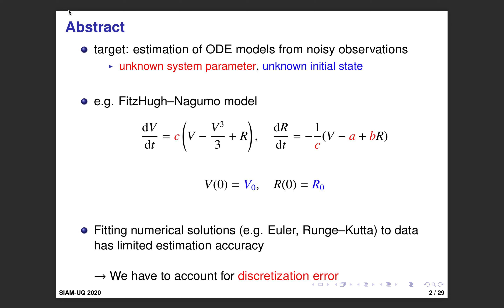For such problems, one usual method is to fit numerical solutions like Euler or Runge-Kutta solutions to the observation data. But such a data fitting procedure has limited estimation accuracy, especially when the numerical solution is not so accurate. In other words, we have to account for the discretization error in estimation of ODE models.